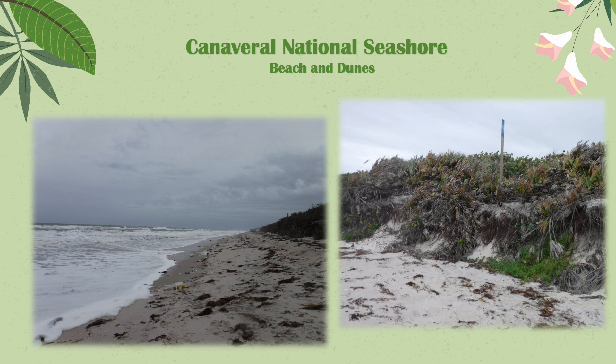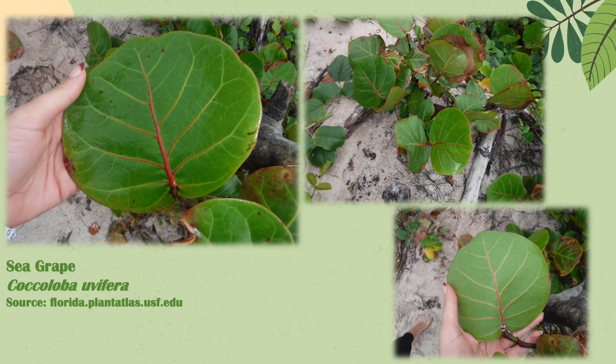Now moving on to the Canaveral National Seashore — this was our beach and dune habitat. Starting off with plants, this is the sea grape plant, Coccoloba uvifera. These are my favorite plants in the world; since I was young I've just loved them. The adult organisms are considered sessile, so once they choose their location they're kind of stuck there, and these plants are also hermaphrodites.